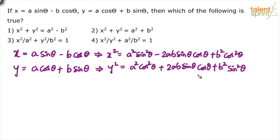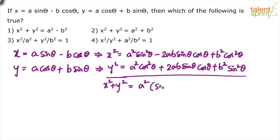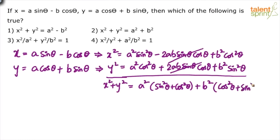Now add both equations. On the left side we get x² + y², which equals a²·sin²θ + a²·cos²θ — taking a² common gives sin²θ + cos²θ. The middle terms +2ab·sinθ·cosθ and -2ab·sinθ·cosθ cancel. Then b²·cos²θ + b²·sin²θ gives b²(sin²θ + cos²θ). Since sin²θ + cos²θ = 1, both bracketed terms equal 1.